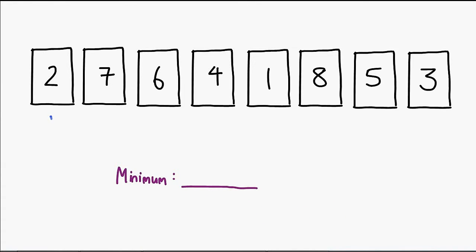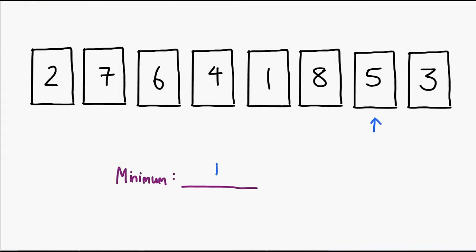What's going to happen is I'm going to make a pass through the list and find the smallest item. I'm going to put the first digit as the minimum first, and as I move on, if I see a smaller number, I'll go ahead and take note of that, because then we know that that element is actually smaller. By doing this throughout the entire list, we'll be able to find the smallest element.